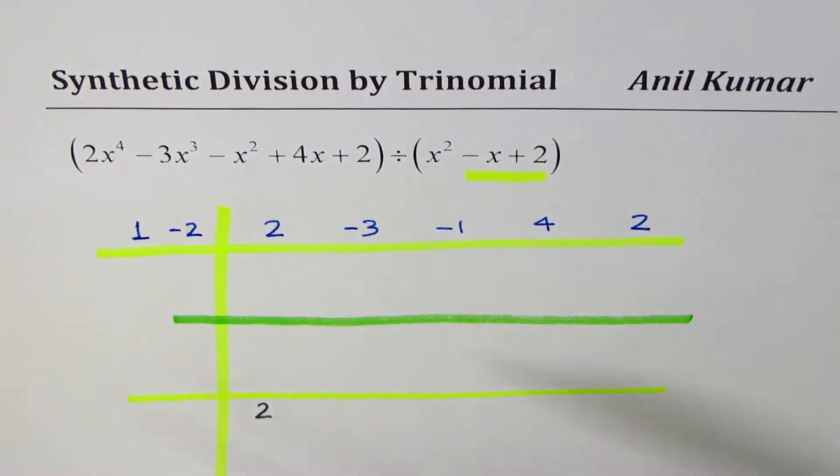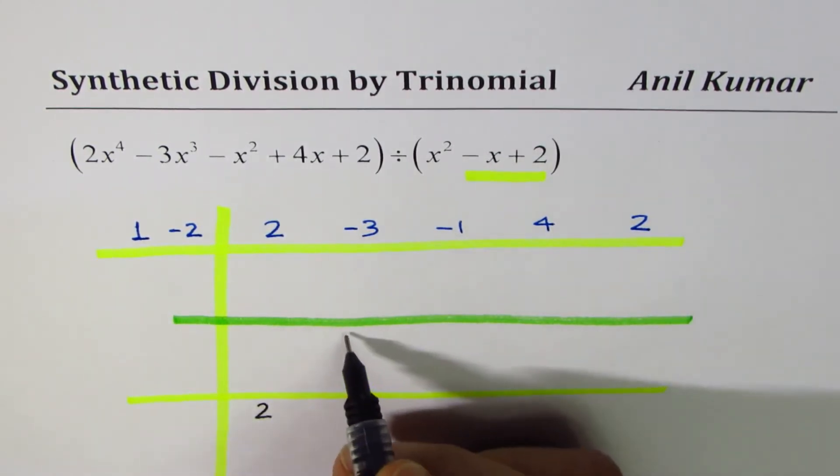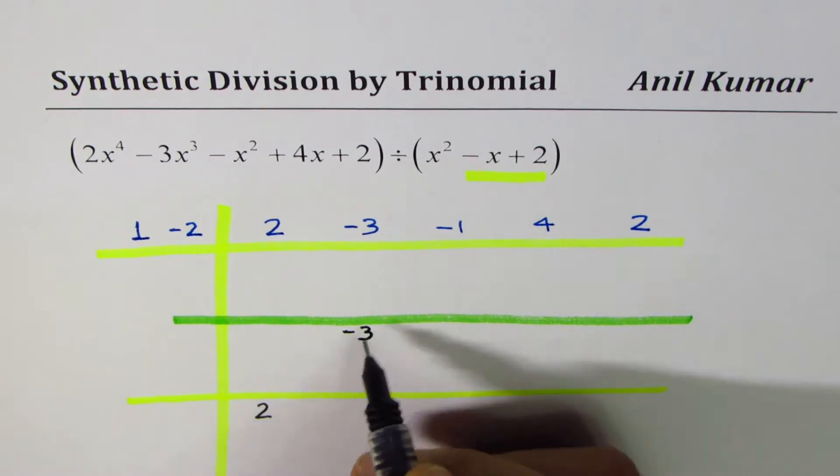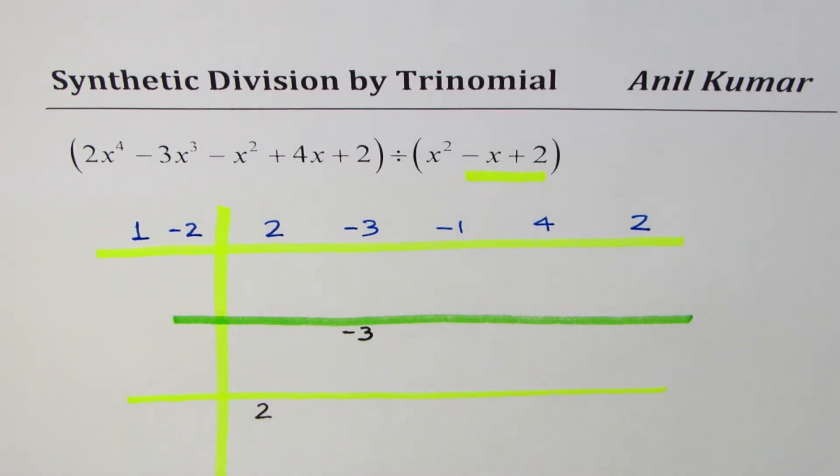What we do is we bring down the first coefficient to the bottom most, as we did earlier for synthetic division, and then minus 3 comes here. That's the first parallel to what we had.